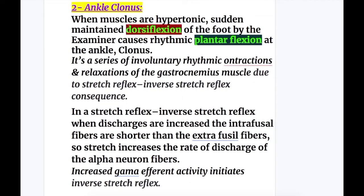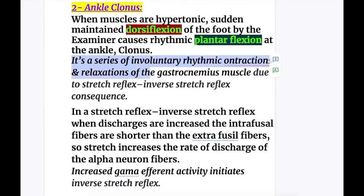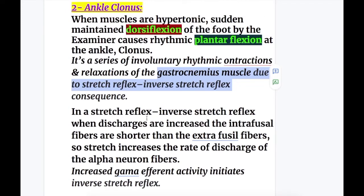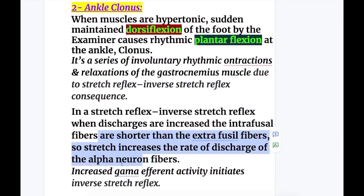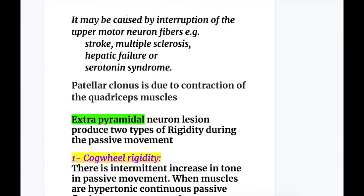The second increase in tone is ankle clonus. When muscles are hypertonic, sudden maintained dorsiflexion of the foot by the examiner causes rhythmic plantar flexion of the ankle — this is known as ankle clonus. It's a series of involuntary rhythmic contractions and relaxations of the gastrocnemius muscle, due to the stretch reflex and inverse stretch reflex consequence. When discharges are increased, the intrafusal fibers are shorter than the extrafusal fibers, so stretch increases the rate of discharges of the alpha motor neuron and increased gamma activity initiates the inverse stretch reflex. Ankle clonus may be caused by interruption of upper motor neuron fibers, for example in stroke, multiple sclerosis, hepatic failure, or serotonin syndrome.